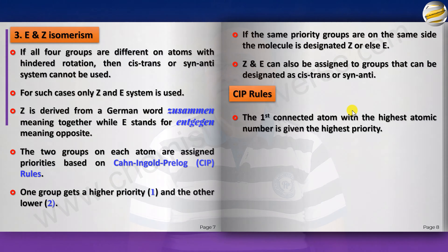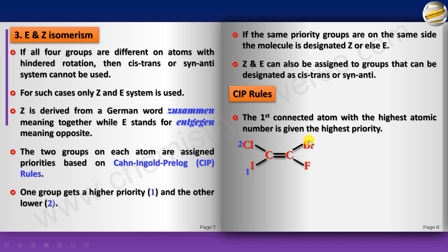In a specific example: on one carbon, groups are I and Cl; on the other carbon, groups are F and Br. Iodine beats chlorine — I gets priority 1, Cl gets priority 2. Bromine beats fluorine — Br gets priority 1, F gets priority 2. Are the priority-1 groups (I and Br) on opposite sides? Yes — so it is E.